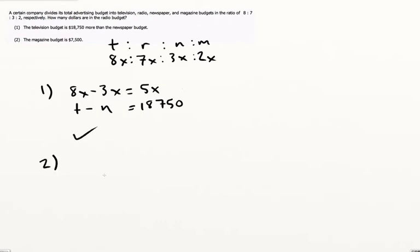Statement 2, the magazine budget is $7,500. We get x. That's good enough. We can go back from x, plug into 3x, we get the answer. That works. So both of the statements are sufficient. The answer is definitely D here.